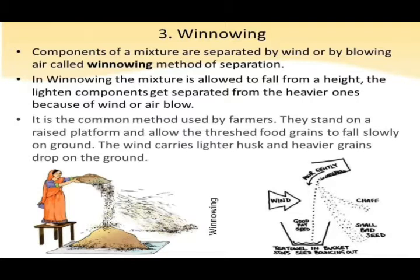The third method is winnowing. Components of a mixture are separated by wind or by blowing air — this is called the winnowing method of separation. In winnowing, the mixture is allowed to fall from a height. The lighter components get separated from the heavier ones because of wind or air blowing below.